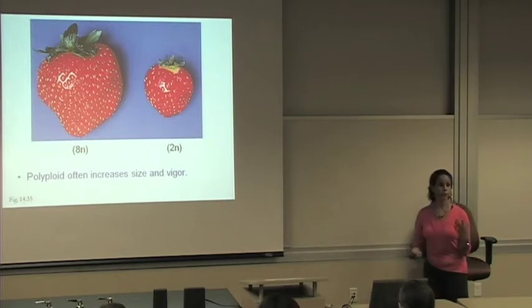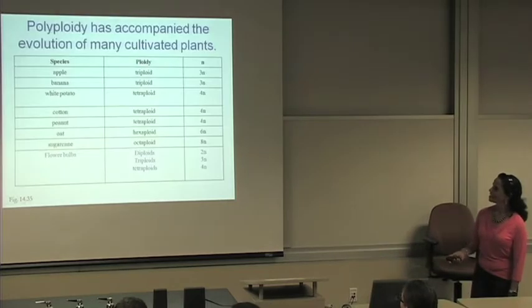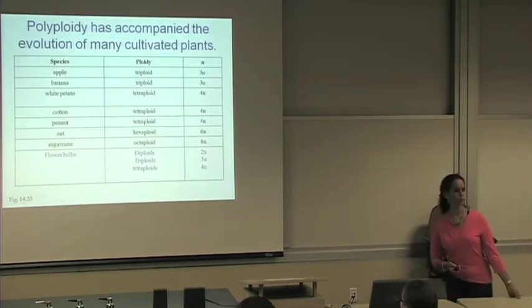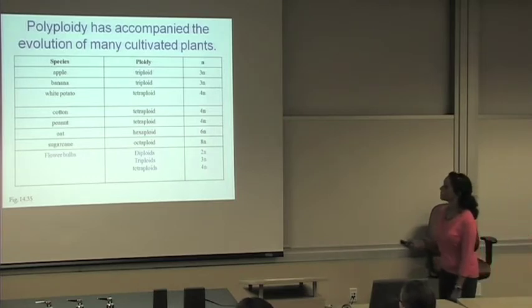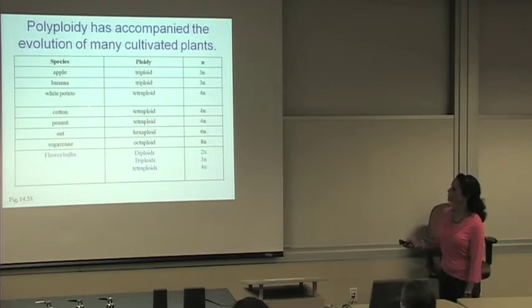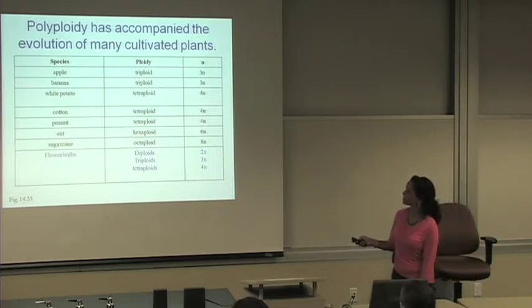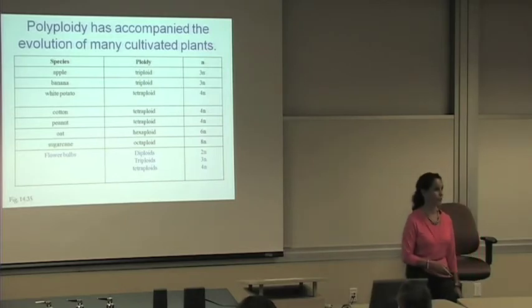Okay. So here is the beauty of polyploid. It's going to give us larger fruits, larger leaves, larger flowers. Which strawberry would we prefer to eat? Definitely the large one. So in plants, polyploidy is a natural event that occurred throughout evolution. We have apples and bananas that are triploid. Not all of them, but many of them are triploid. White potato, cotton, peanut, oats, excuse me, peanuts are tetraploid. Oats are hexaploid, six sets of chromosomes. And sugarcane has eight sets of chromosomes.